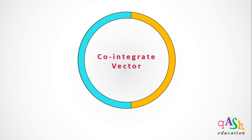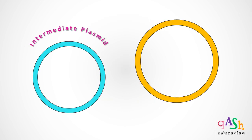Out of the two plasmids that participate in the formation of a co-integrate vector, one is an intermediate plasmid and the other is a disarmed Ti plasmid. A disarmed Ti plasmid is a type of Ti plasmid that does not carry genes for tumor induction. An example is GV3850.